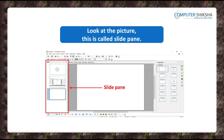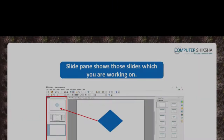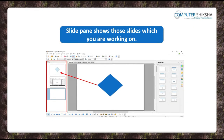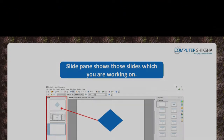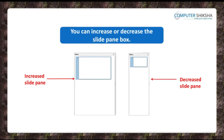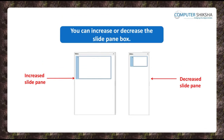Look at the picture in front of you. This is called the Slide Pane or Slide Bar. The Slide Bar shows you the slides that you are working on. Let us now watch this video and learn how we can hide or show the Slide Bar and also how we can increase or decrease its box size.